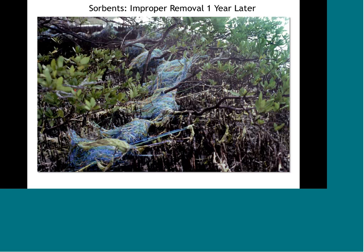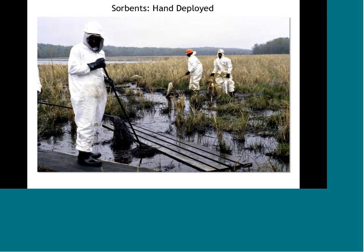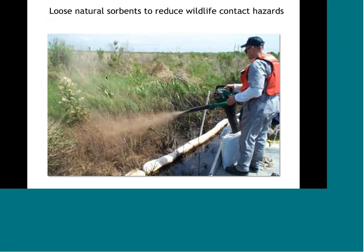Sorbents can escape and cause wildlife hazards, as seen in Tampa Bay a year after a spill where sorbent material remained entangled in mangroves. Sorbents can also be hand-deployed inside a marsh where no other technique is effective — workers walking on boards can use sorbents to pick up thick oil inside the marsh where it's not accessible for pumping or vacuuming equipment.